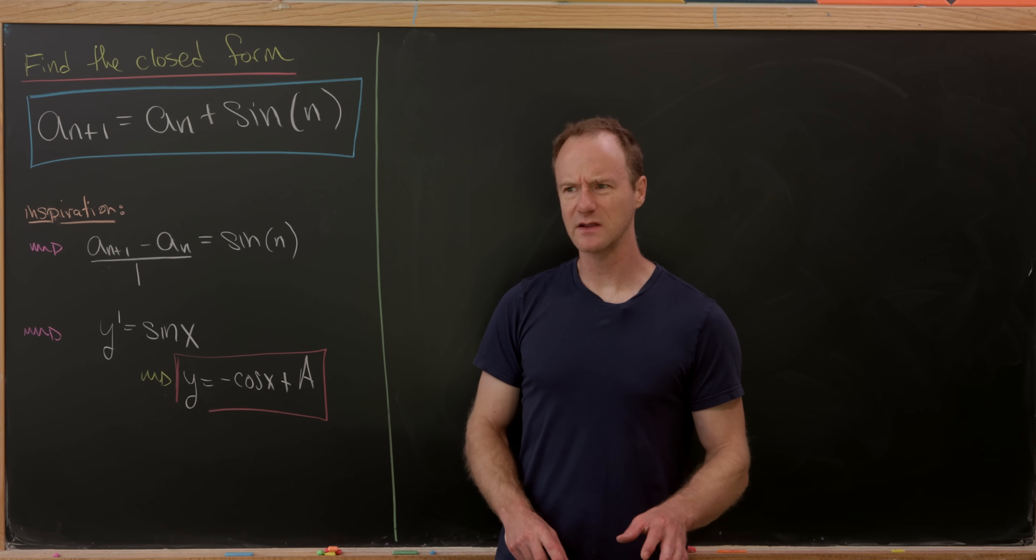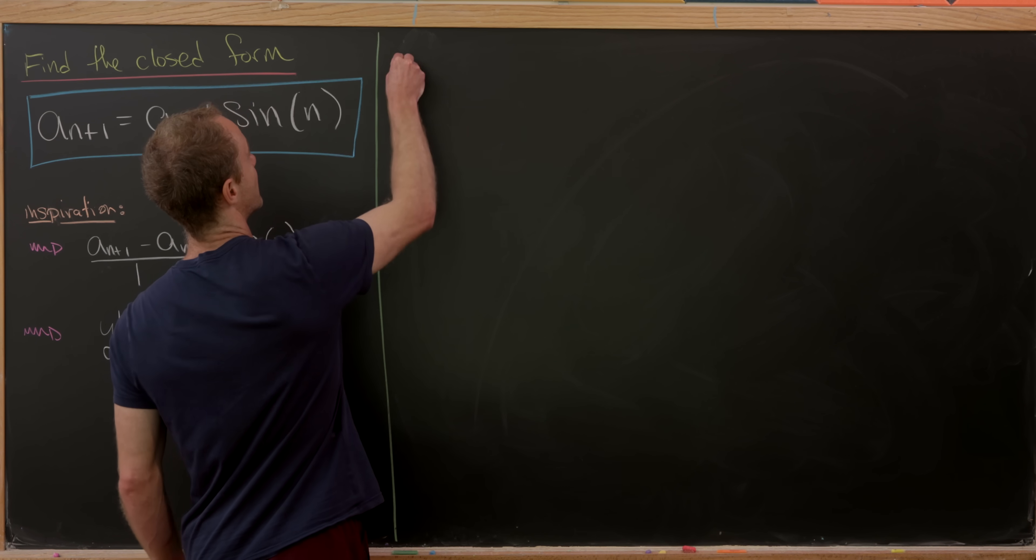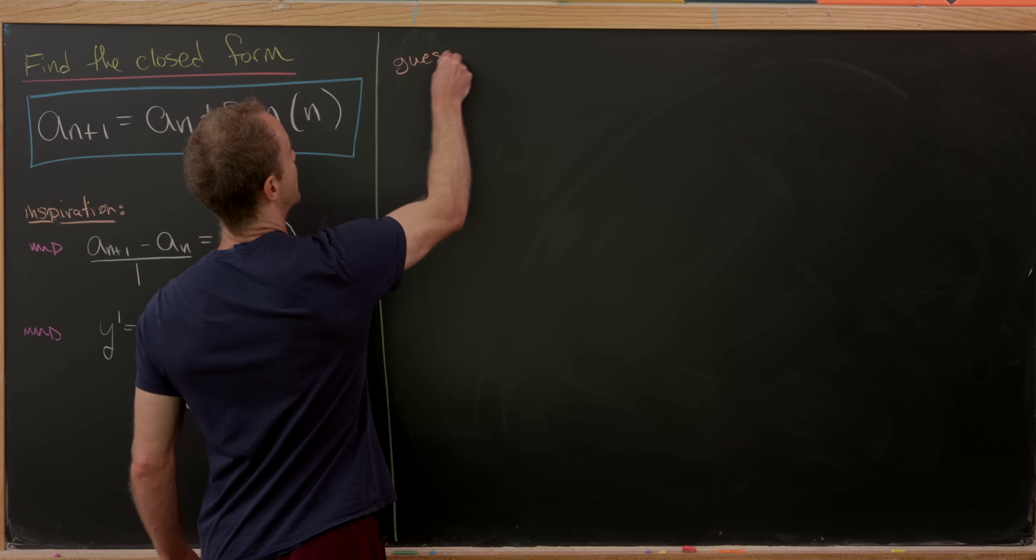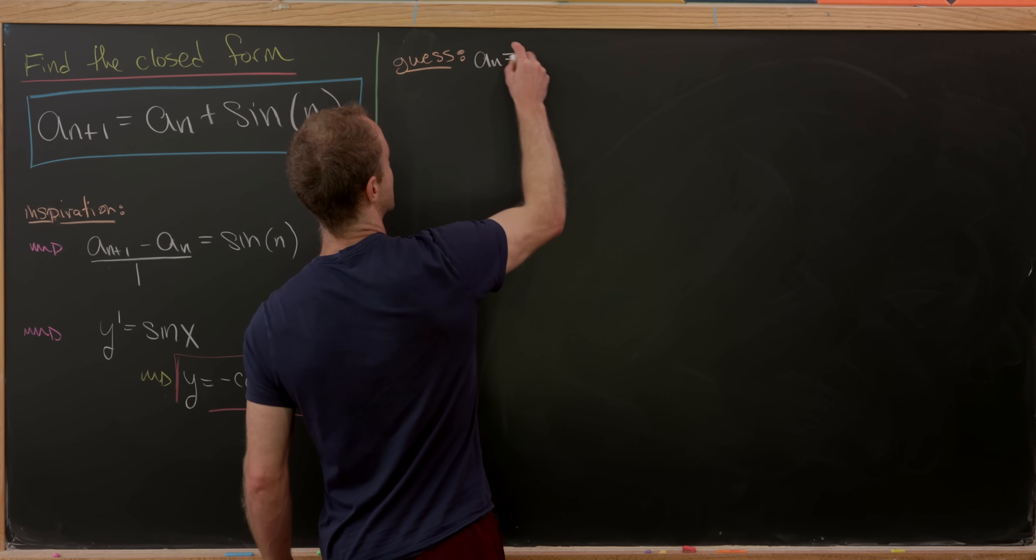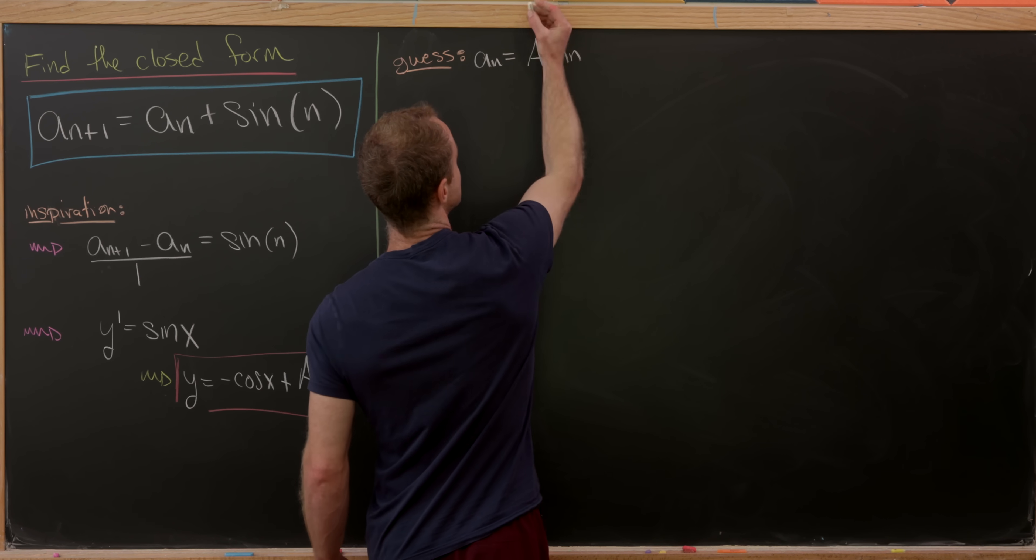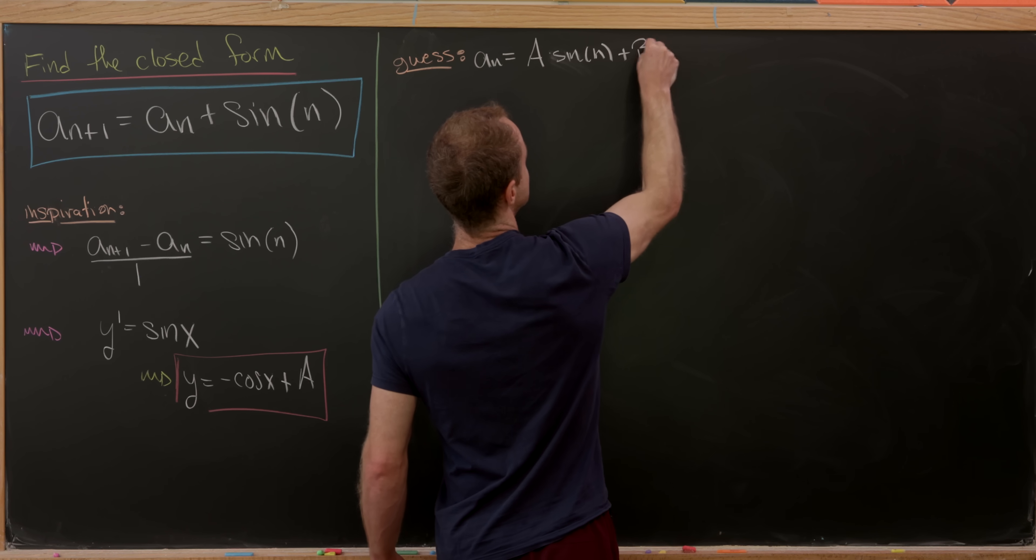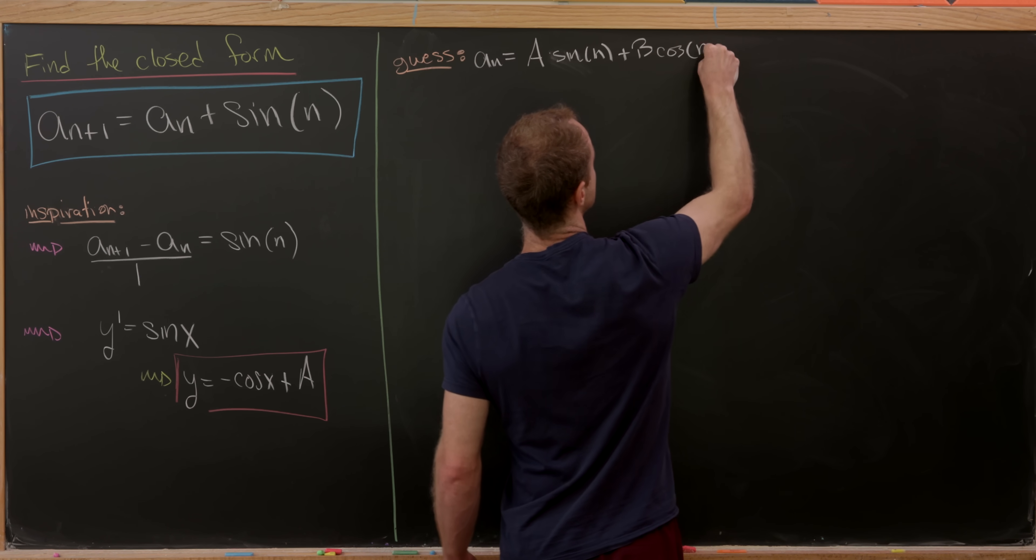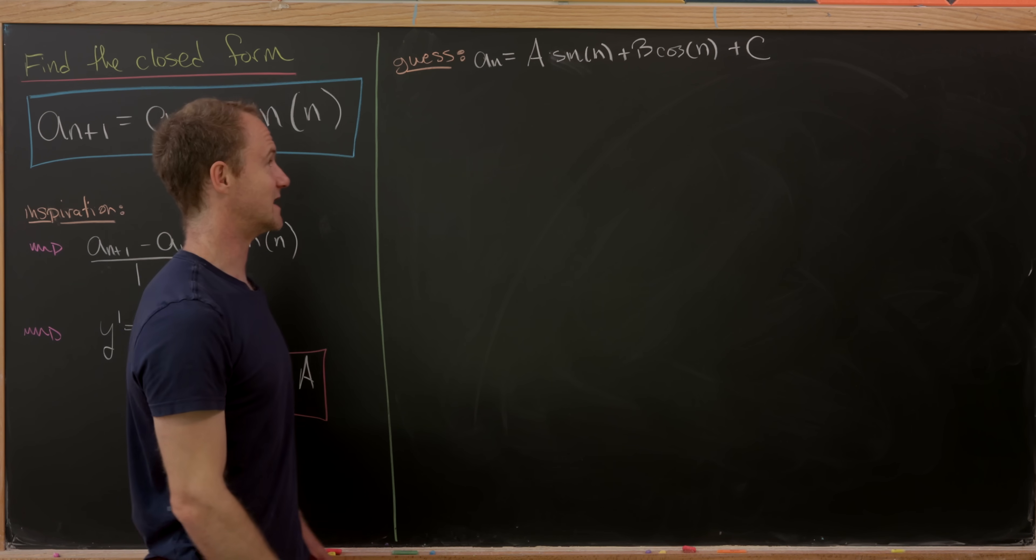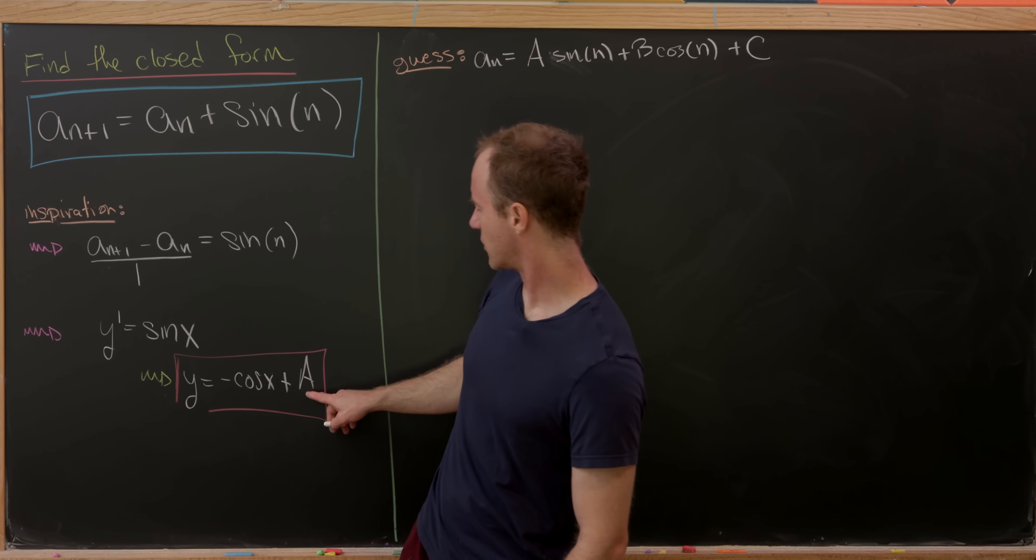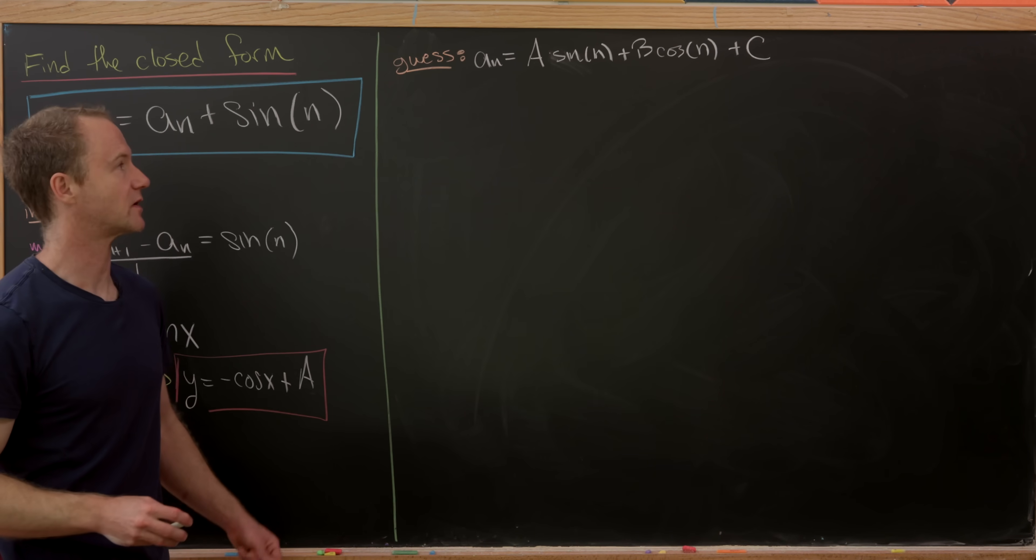So now let's take inspiration from this and form maybe a first guess for our solution. And that guess will be to set a sub n equal to some constant a times sine of n plus some constant b times cosine of n. And then just for good measure, we'll say some constant c, because we expect there to be a constant basically with respect to integration or a constant of integration built into this.